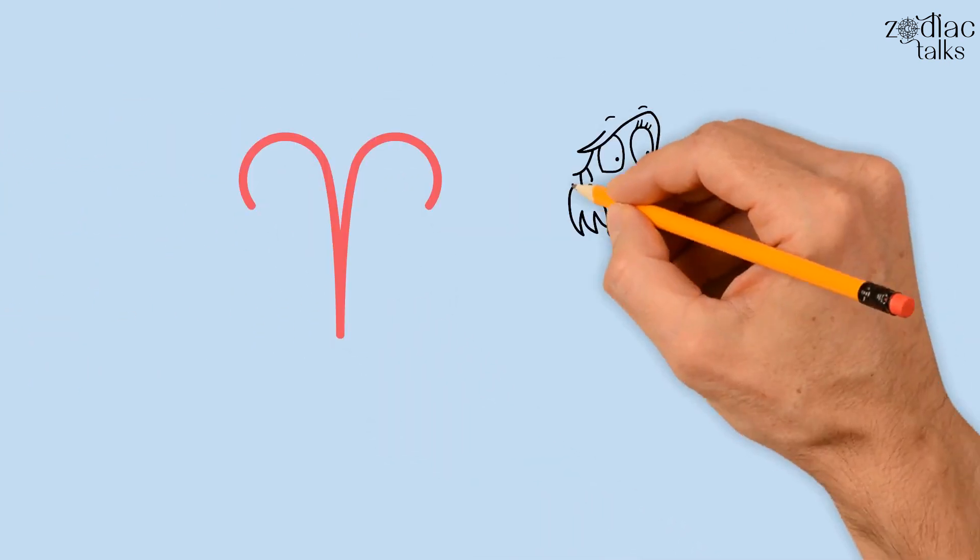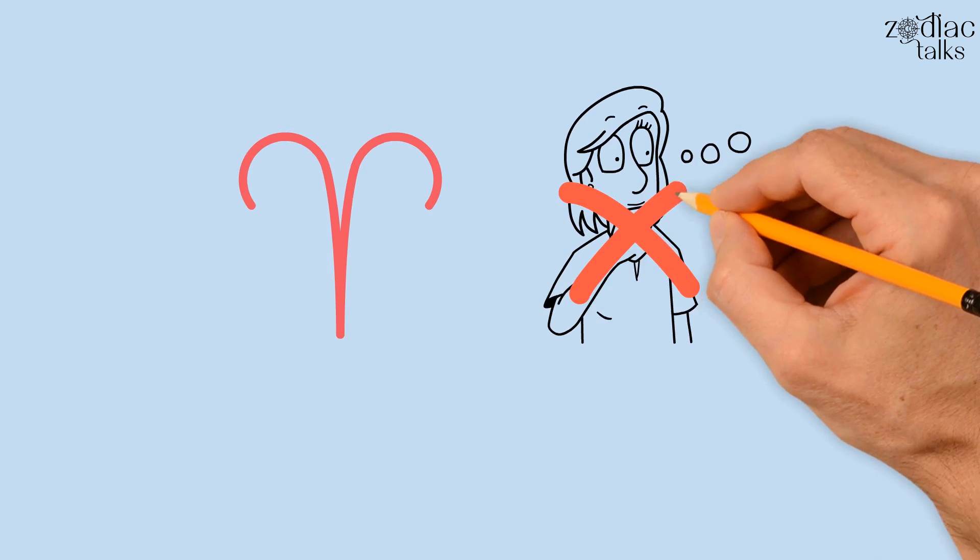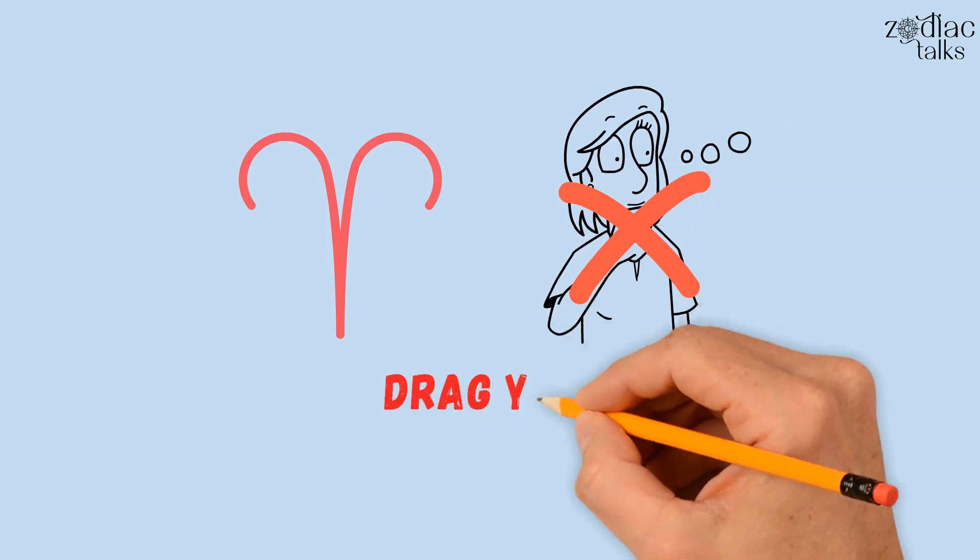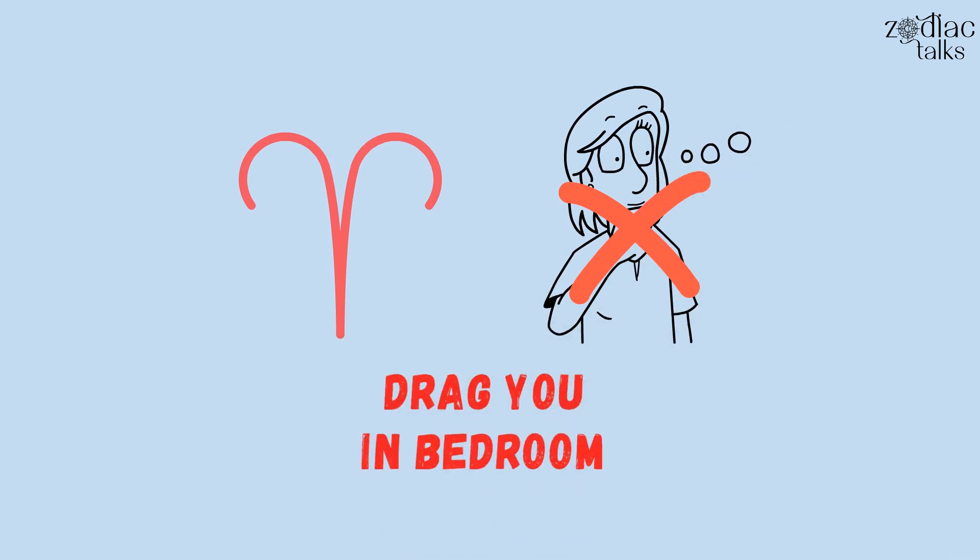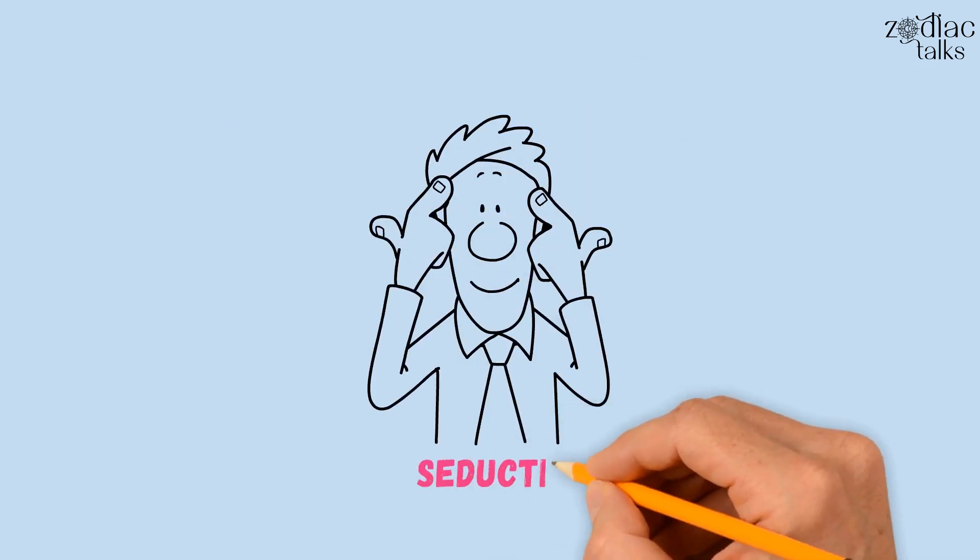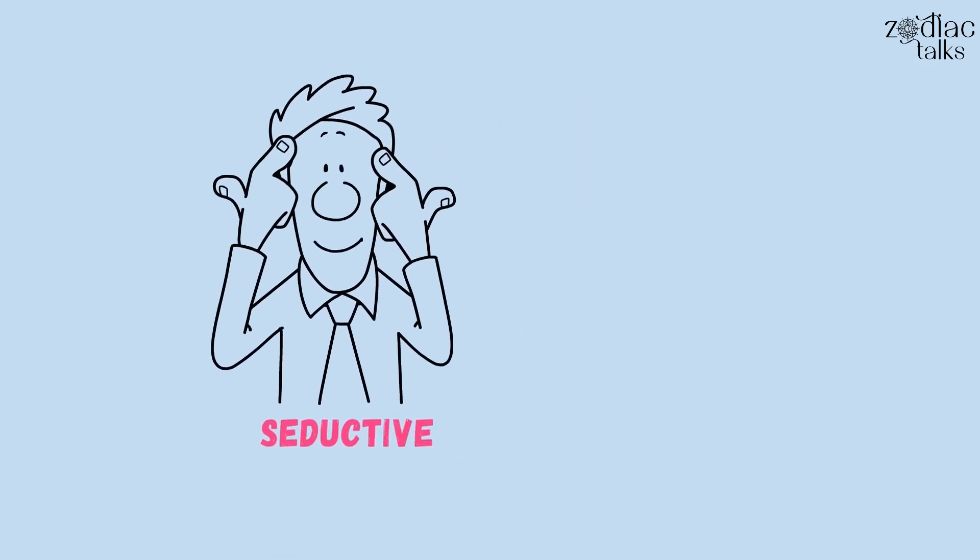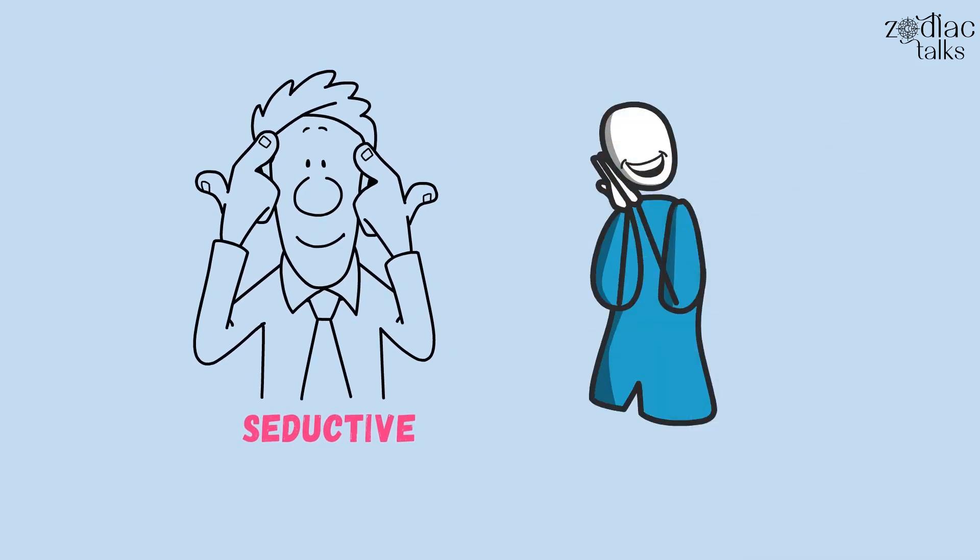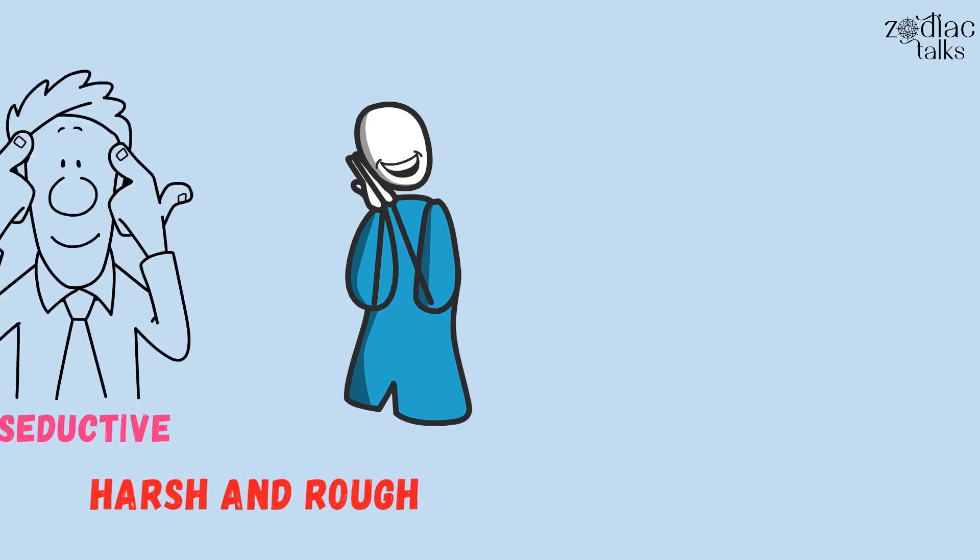Aries are equally spontaneous and unpredictable in other areas of life. They can drag you into the bedroom any time they feel sensual. Aries people know how to be seductive. Once their eroticism is aroused, they satisfy their sensual thirst in different ways, sometimes even getting harsh and rough to derive the pleasure they need.